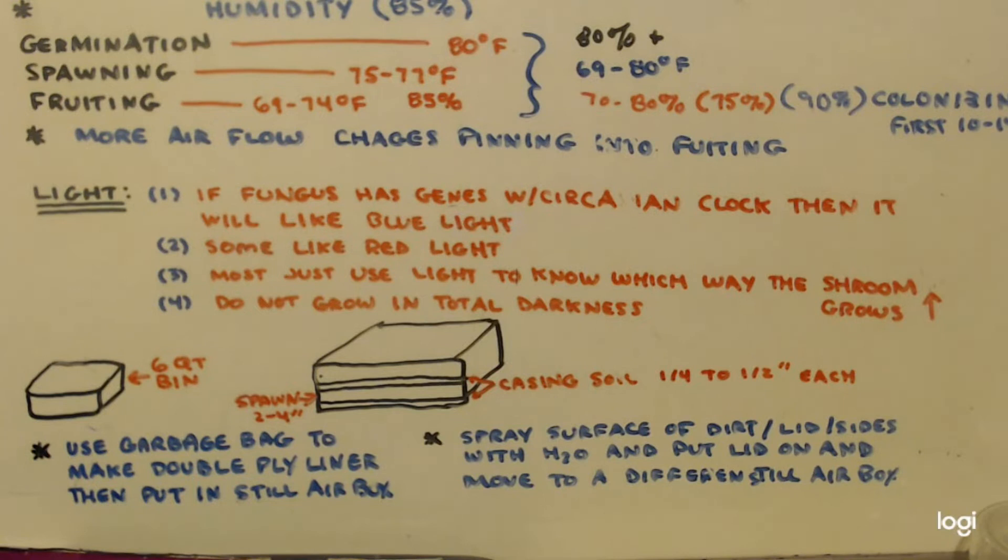If fungus has a gene with a circadian clock, then it'll like blue light. Some like red light if they have a different type of gene. Most just use light to know which way that mushroom is supposed to grow. Just like if you see plants growing towards the sun, mushrooms like to do that too. Do not grow them in total darkness.